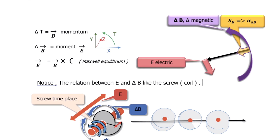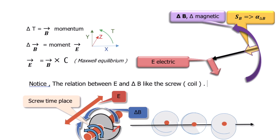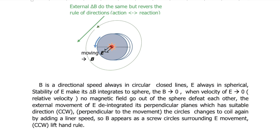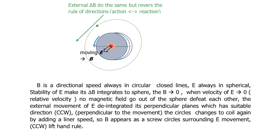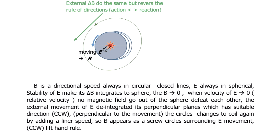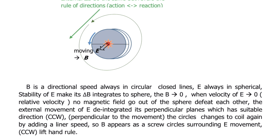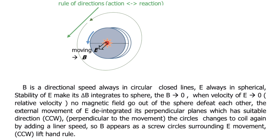The system of electromagnetism is composed from magnetic plus electric fields. B is a directional speed always in circular closed lines; E is always in spherical form. The stability of E makes delta P integrate to a sphere, so B goes to zero. When velocity of E tends to zero, there is no relative velocity and no magnetic field — they cancel out of the sphere.